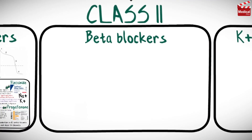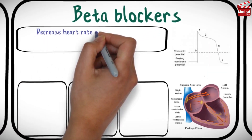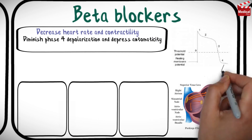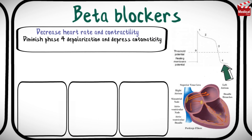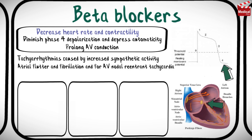Class 2 agents are beta-adrenergic antagonists. These drugs decrease heart rate and contractility, and they diminish phase 4 depolarization, depress automaticity, and prolong AV conduction. These agents are useful in treating tachyarrhythmias caused by increased sympathetic activity, and are useful for atrial flutter and fibrillation, and for AV nodal reentrant tachycardia.